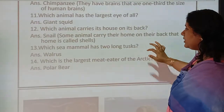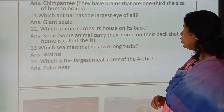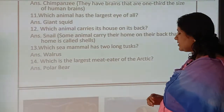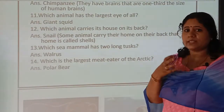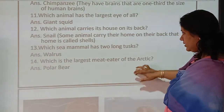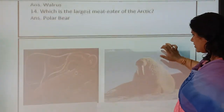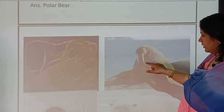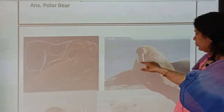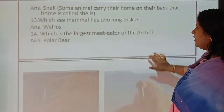Which sea mammal has two long tusks? Tusks means teeth. The answer is walrus. Here, see the walrus with its two tusks.